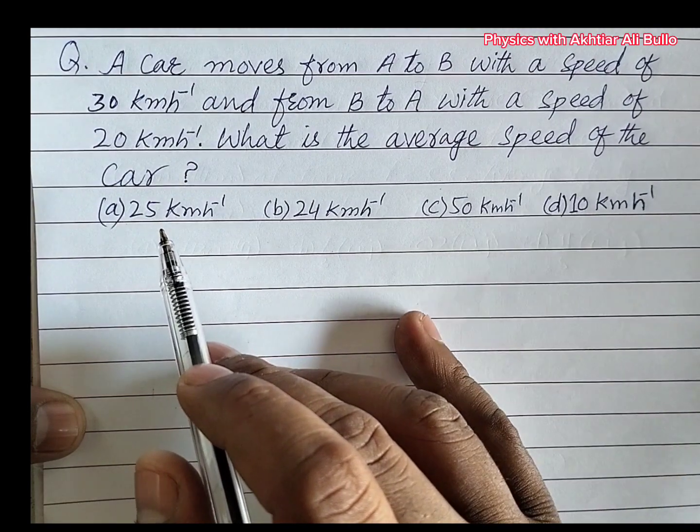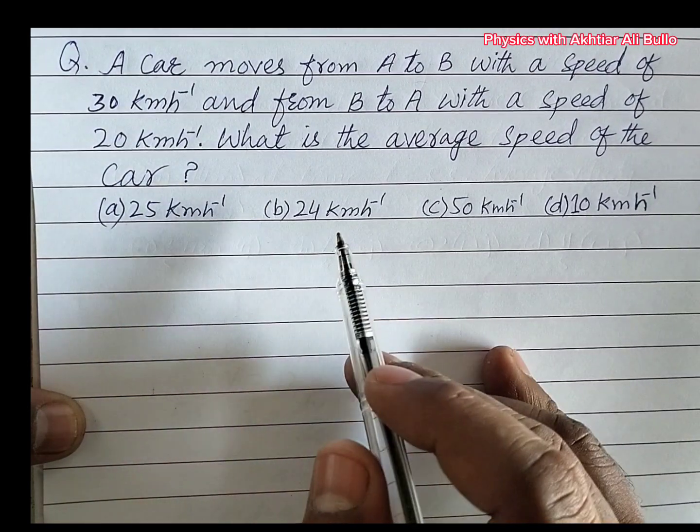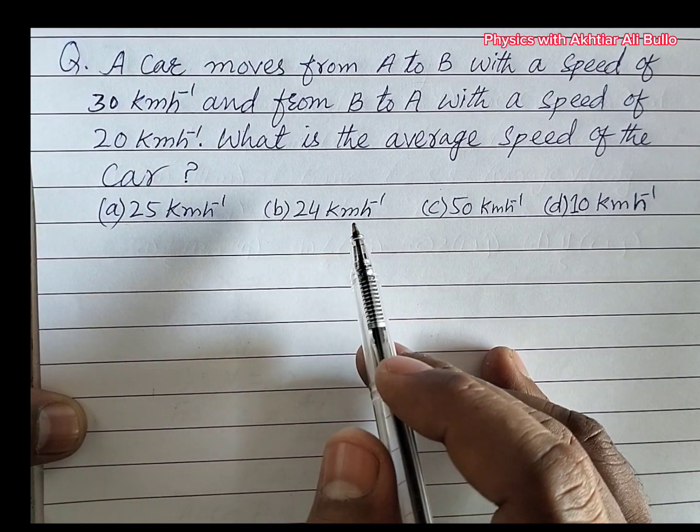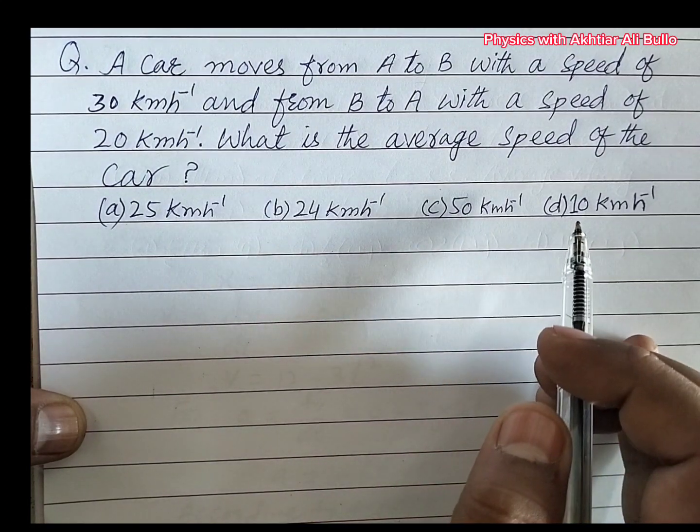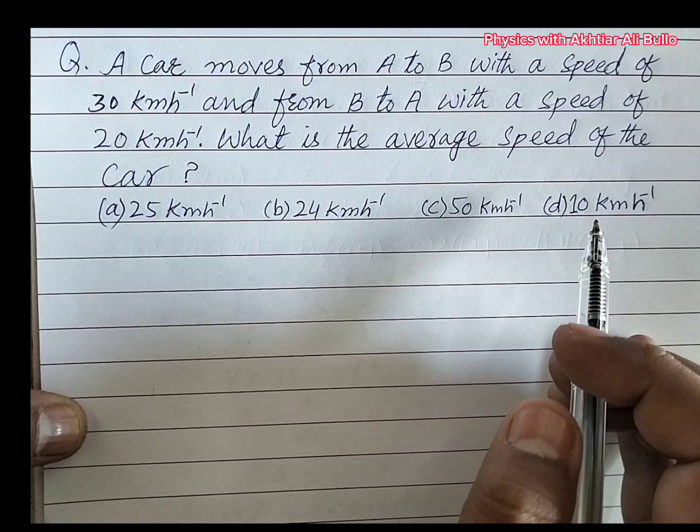A, 25 km per hour. B, 24 km per hour. C, 50 km per hour. D, 10 km per hour.